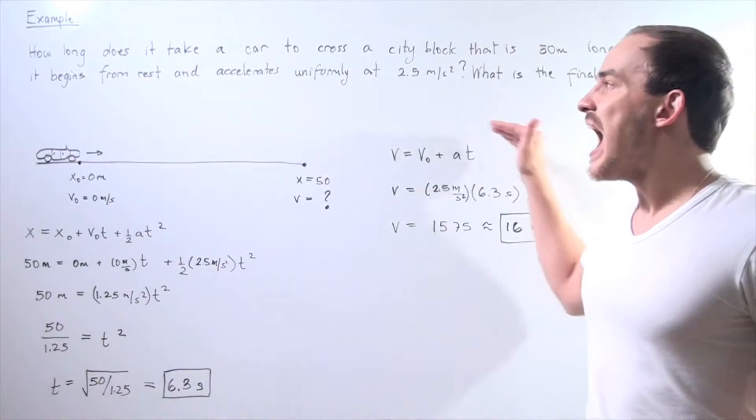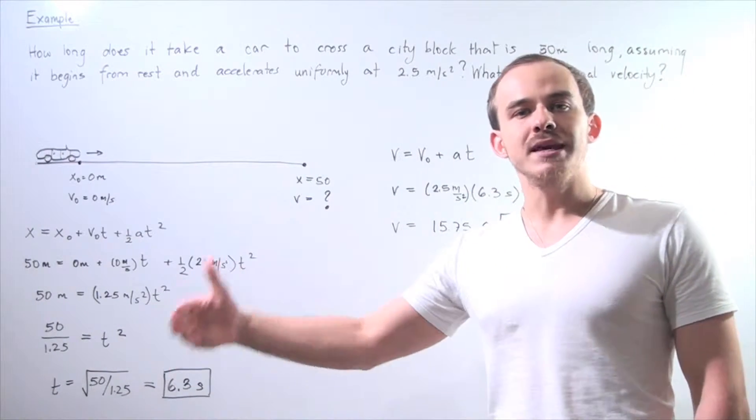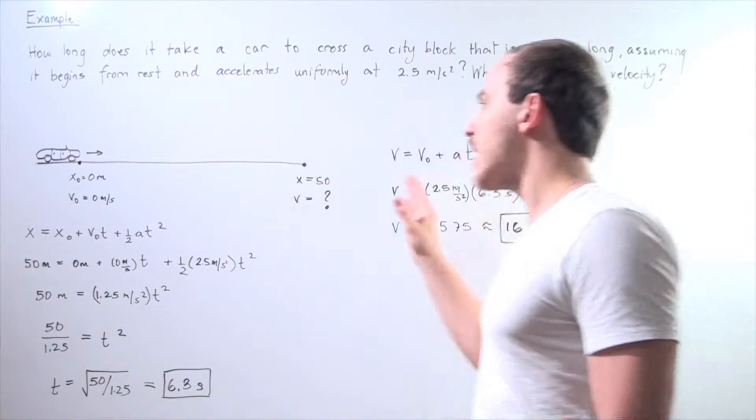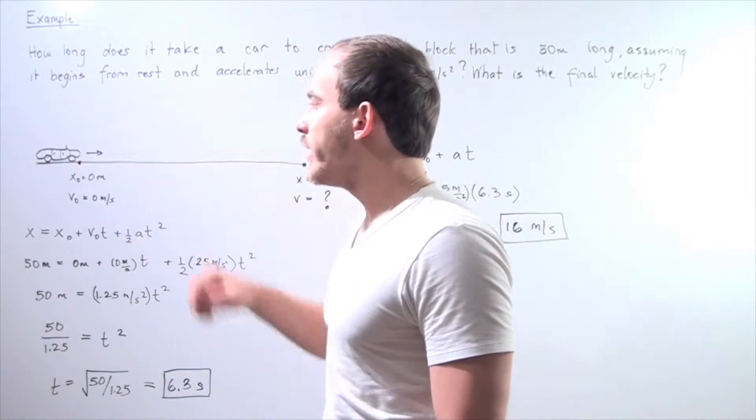We're looking for the time it requires for our car to travel those 50 meters and the final velocity at the 50-meter mark. So let's draw our diagram. Here we have our car. It begins at some initial point.